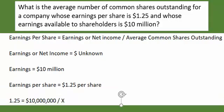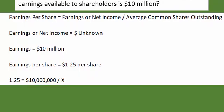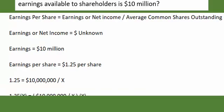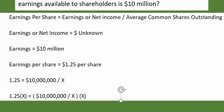So let's work through how we would solve this. We know that the formula is earnings per share equals earnings divided by shares — so income divided by shares. They gave us $1.25 as the earnings per share, and we know the earnings were $10 million, but we have to solve for X. So just using algebra, we multiply both sides by X.